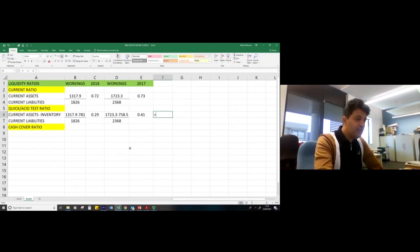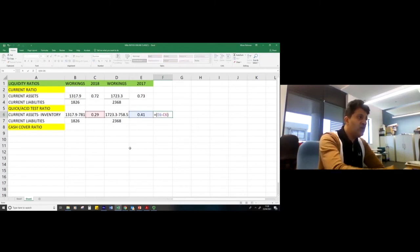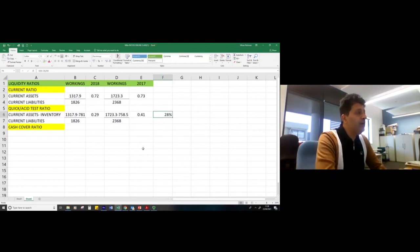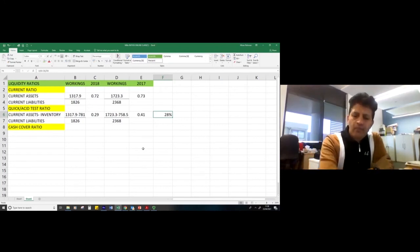We could calculate the percentage deterioration, which would be 0.41 minus 0.29 divided by 0.41, and that is a 28 percent decrease in our quick ratio. Both of those are far below ideal ratio. Ideally it should be one to one.